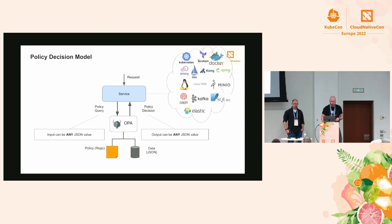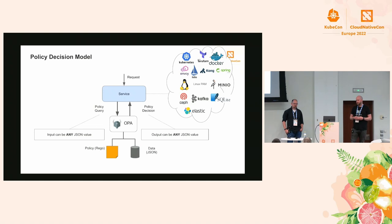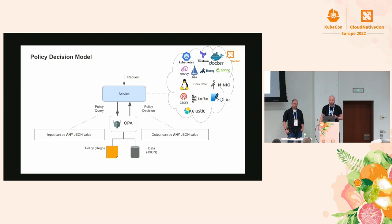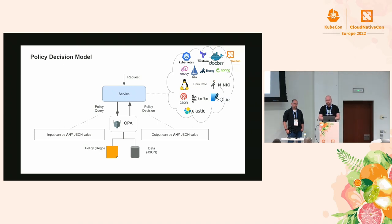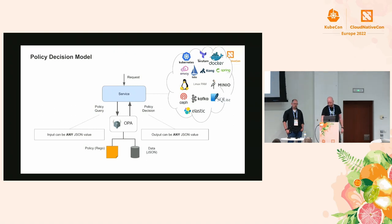When we say 'service,' it's not necessarily a microservice - it could be anything: a Kafka broker, a Linux PAM module, an API gateway, or similar. Pretty much anything that can talk HTTP and understands JSON can integrate with OPA, and most of these technologies have some way of communicating over HTTP.